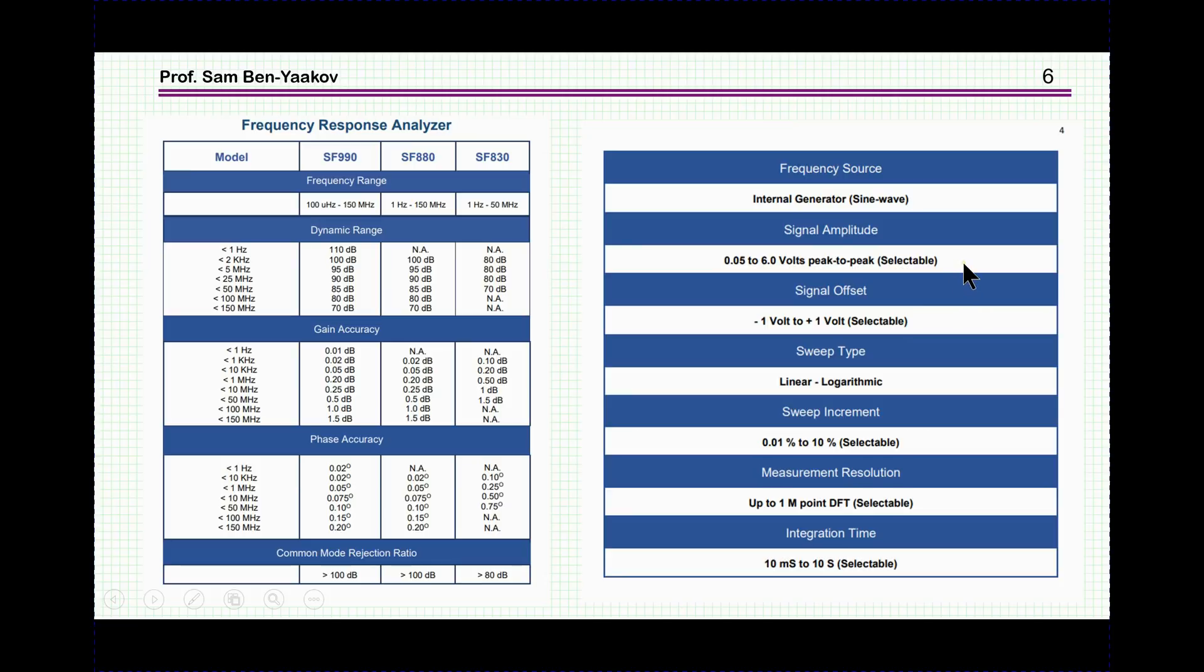So we have a frequency source, the internal generator is the sine wave generator. The amplitude is 0.05 to 6 volts, so it can be selected. It doesn't say what's the output impedance. I hope it is 50 ohms. The signal has an offset that's not that important. Sweep could be linear or logarithmic. The sweep increment could be by percent. And then you can actually choose the frequencies, the specific discrete frequencies that it will measure at. So there are many options here. And then the resolution of the measurement is up to 1 megapoint of this digital discrete Fourier transformation, which is the algorithm used to extract digitally the information from the signal. And this is very important. Of course, what is important is the bottom line, how well does it do the job. And then it has an integration time between 10 milliseconds to 10 seconds. This is again noise attenuation. Of course with 10 seconds then it will take you forever probably to end the sweep.